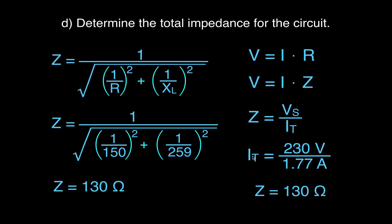I apologize for a little cut-and-paste problem here, but this should read impedance, impedance, impedance, voltage, voltage, answer, and current, current, and then the answer. You can see we get the same answer twice, and therefore we're pretty confident that the values we calculated previously are correct.